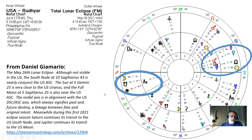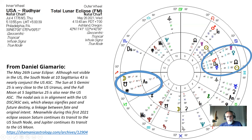In his analysis, Daniel talks about this signifying past and future destiny — a linkage between fate and original intent. This first 2021 eclipse season has Saturn continuing on past the natal position of the South node on the US chart in Aquarius.